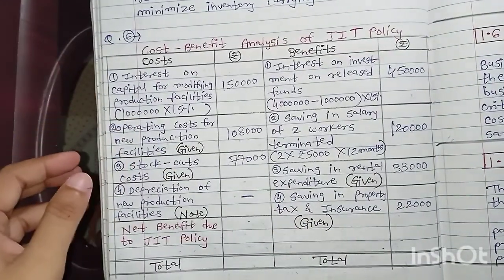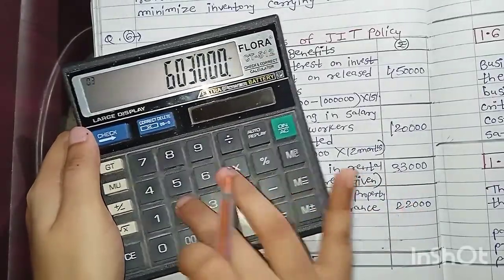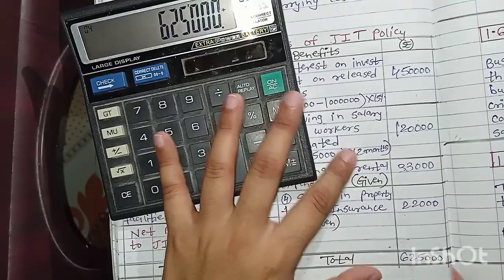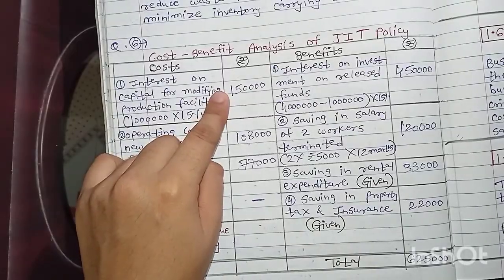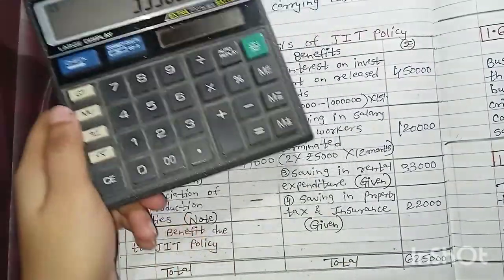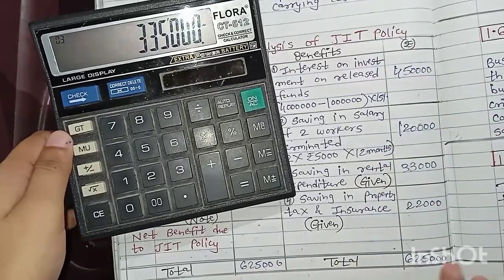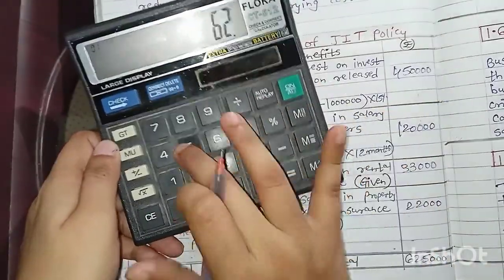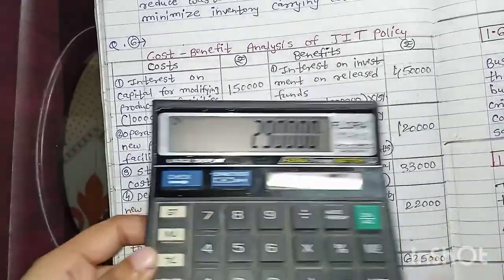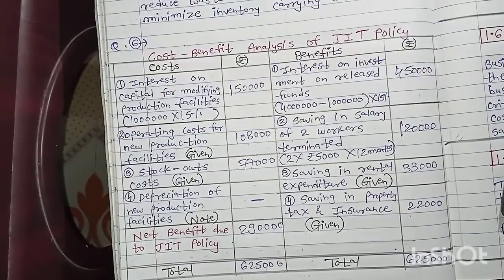Now we close the statement. Total benefits: 4,50,000 plus 1,20,000 plus 33,000 plus 22,000 equals 6,25,000. Total costs: 1,50,000 plus 1,08,000 plus 77,000 equals 3,35,000. Net benefit due to JIT policy is 6,25,000 minus 3,35,000 equals 2,90,000.